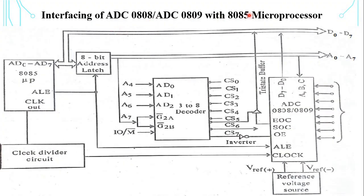This is the interfacing diagram of ADC 0808 or 0809 with the 8085 microprocessor. The chip select signal for IO-mapped devices is generated using a 3-to-8 decoder. The address lines AD0, AD1, and AD2 are used as input to the decoder. Address line A7 and the control signal IO/M-bar are used as enable for the decoder operation.